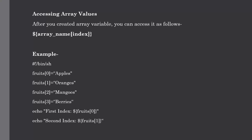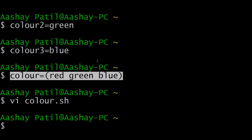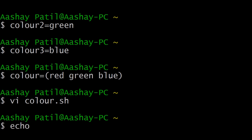Our next topic is how to access array values. We have created one array on the command line and one inside our shell script. To access the values, use curly braces containing the array name, and in square brackets give the specified index of the element you want to retrieve. Use the echo command to print the output and the dollar symbol to call the array variable.